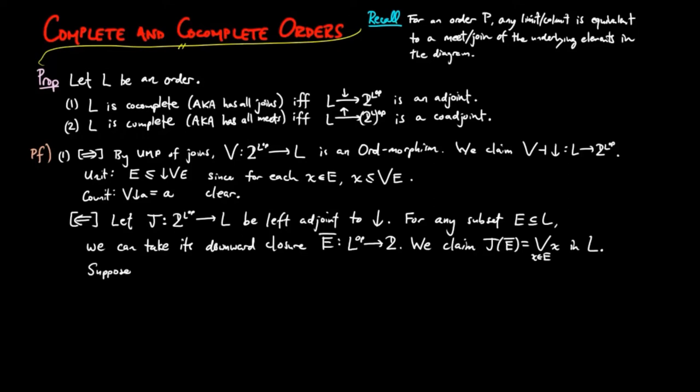Suppose A is less than or equal to X for each X in E. Then the lower segment of A is less than or equal to E bar. And since the downward segment functor is full and faithful, the co-unit J downward segment is the identity.